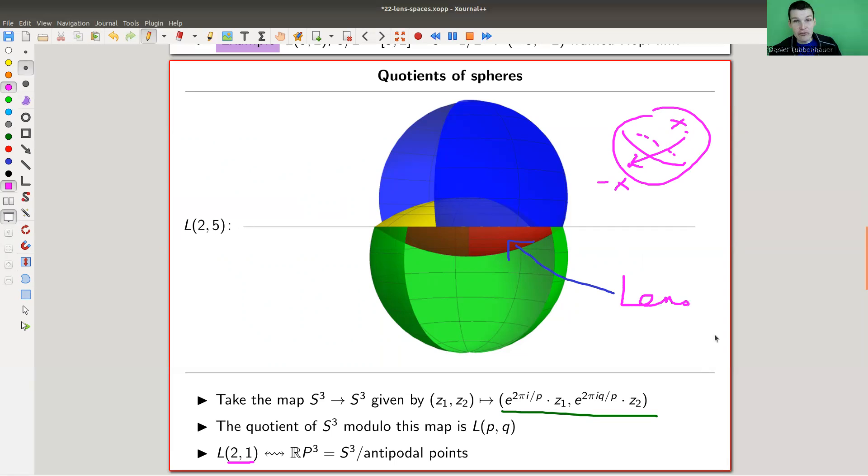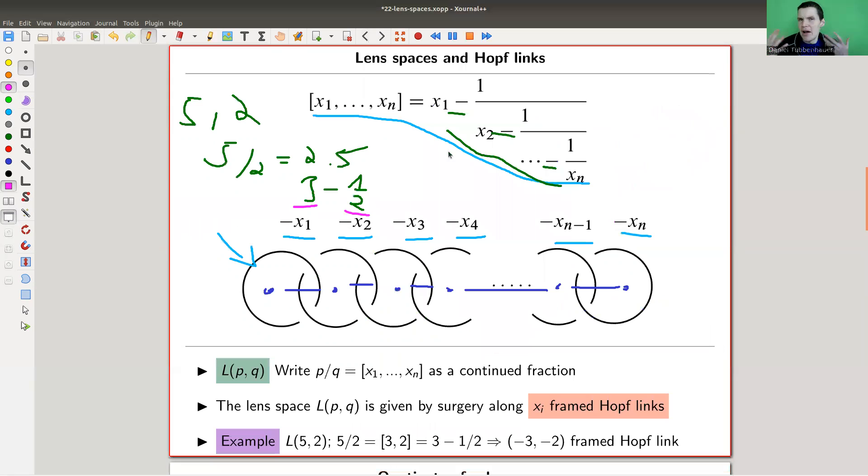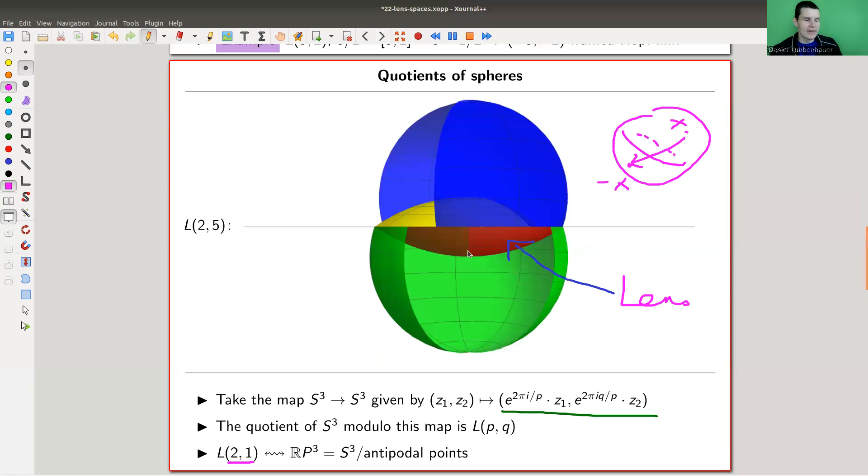I personally find it very hard to imagine. Surgery along Hopf links works much better for my brain, but this one goes back around 100 years. Around 100 years from now, people discovered those lens spaces.